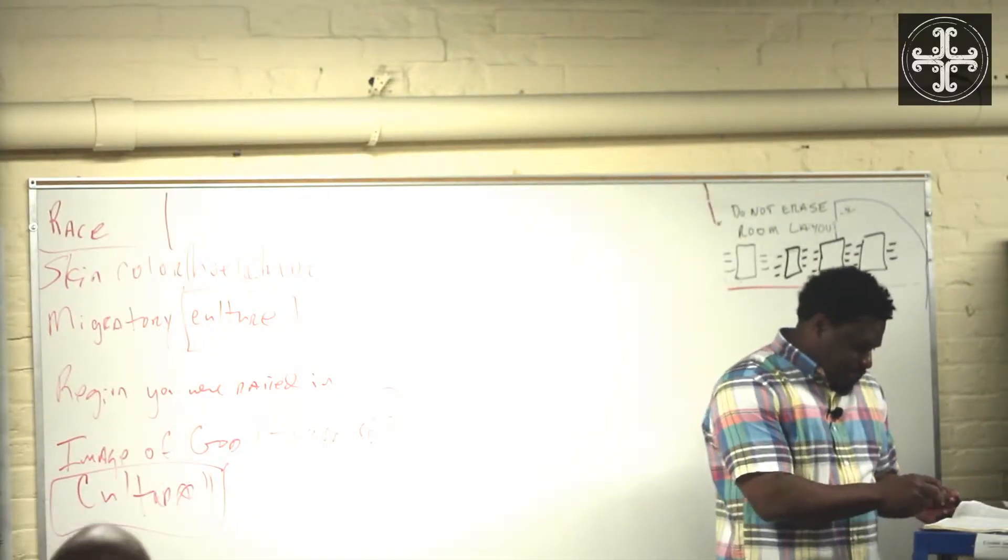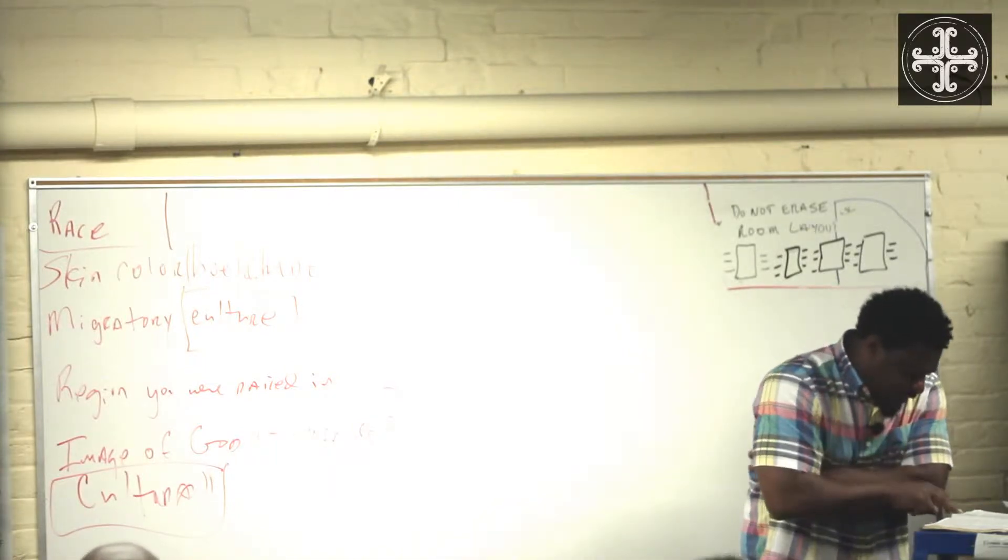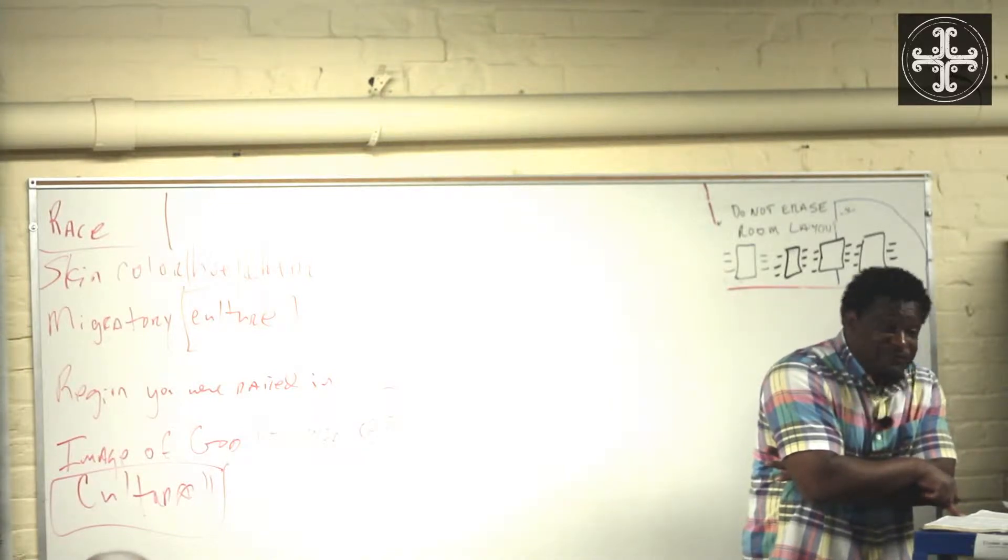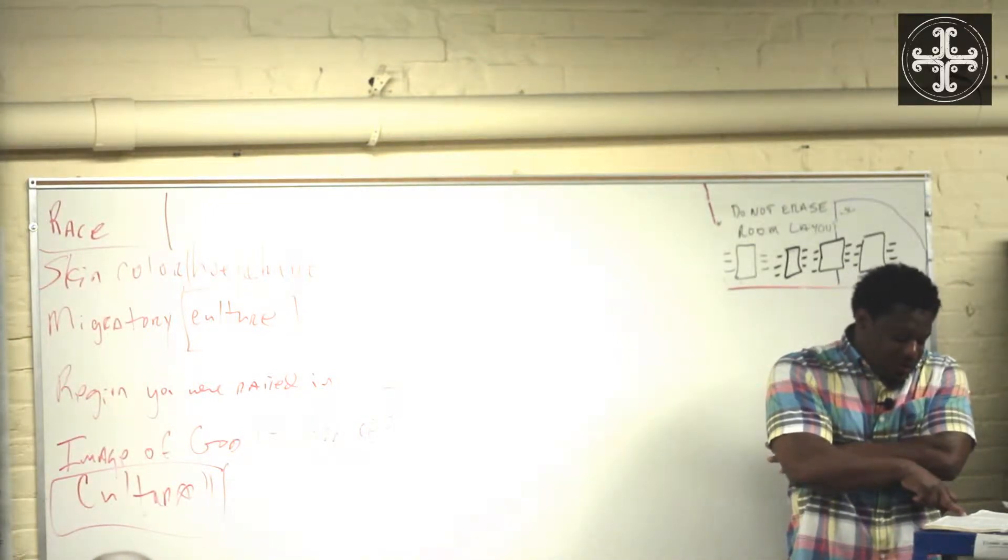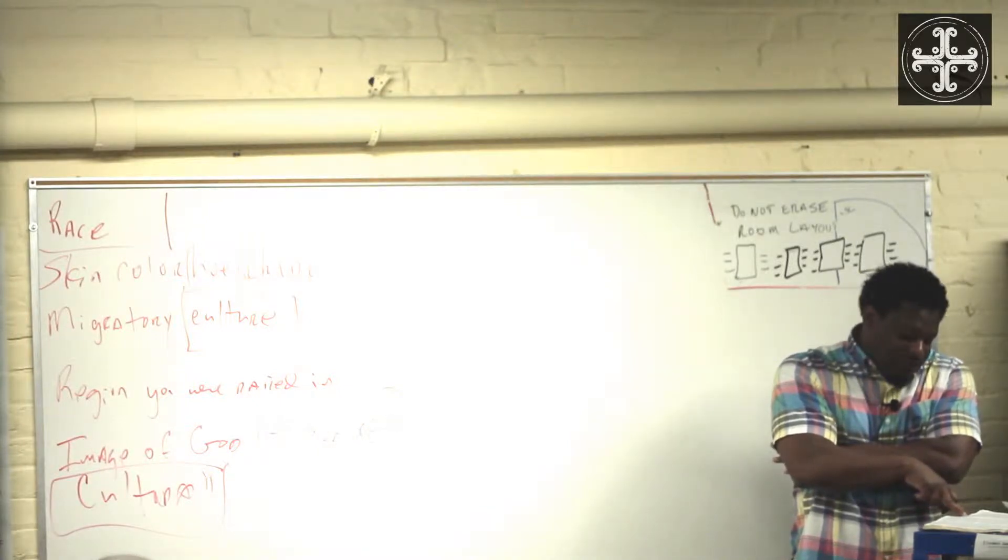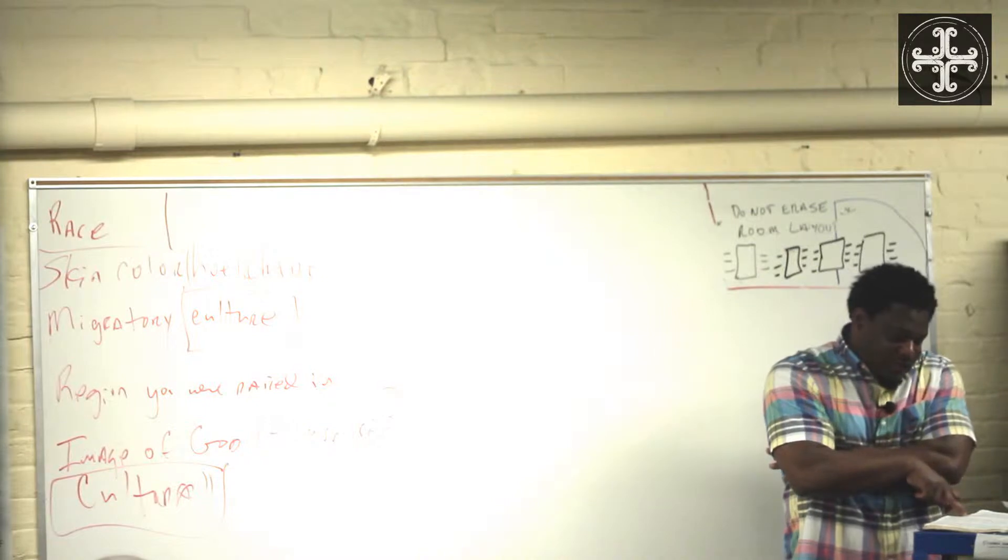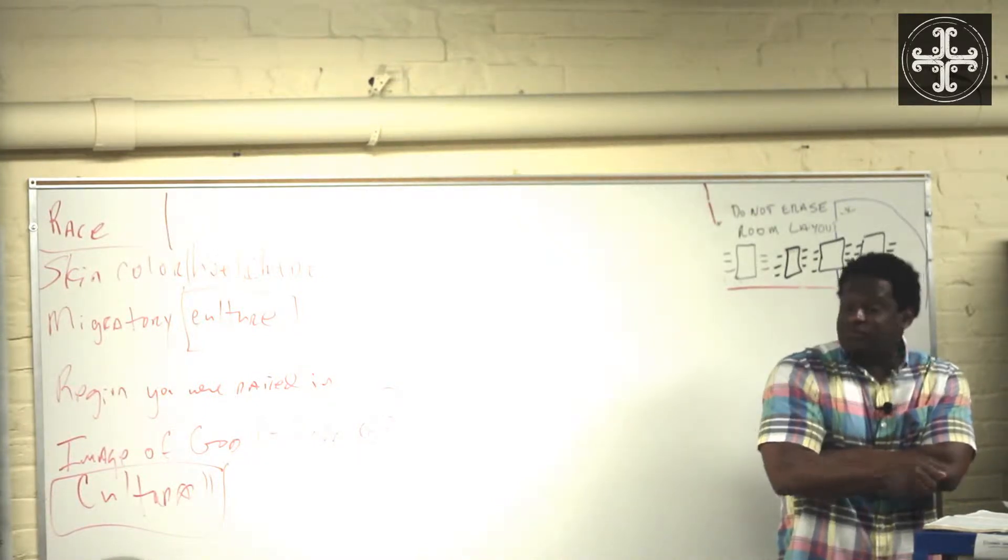Let's look back at, let's look first at the Acts chapter so we can move on. It says here in verse 26, and he made from one man every nation of mankind to live on all the face of the earth, having determined allotted periods and boundaries of their dwelling, that they should seek God and hope that they might feel their way toward him and find him. Then he is actually not far from each one of us.